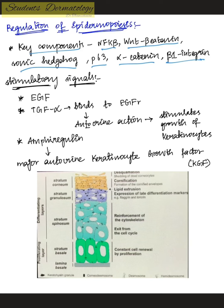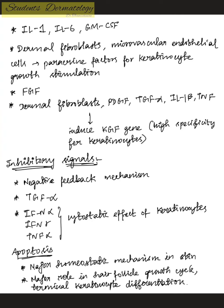Stimulatory growth factors include epidermal growth factor and transforming growth factor, with autocrine and paracrine stimulatory signals. TGF-alpha has an autocrine action — it binds to the epidermal growth factor receptor and stimulates growth of keratinocytes. Amphiregulin is also an autocrine KGF stimulator. Other stimulatory factors include interleukin-1, IL-6, GM-CSF, and paracrine factors such as dermal fibroblasts and endothelial cells. Fibroblast growth factors, PDGF, IL-1 beta, and TNF all induce the keratinocyte growth factor gene, which is highly specific for keratinocytes.